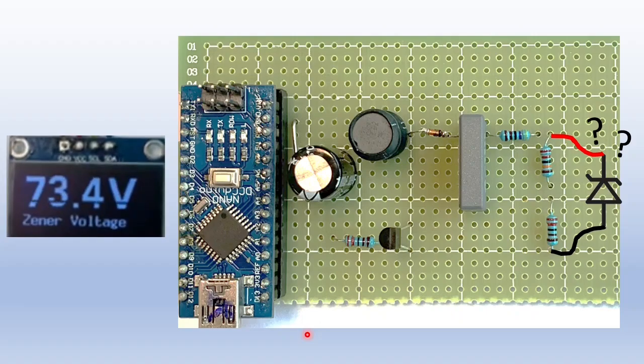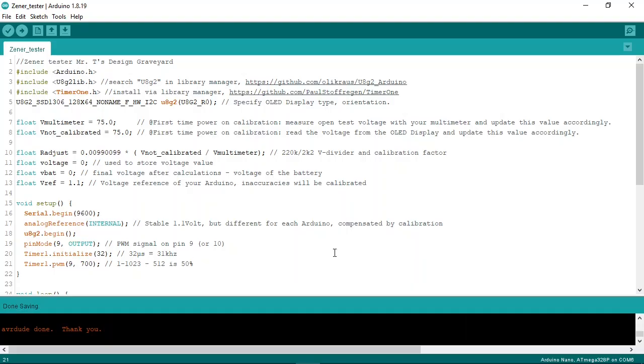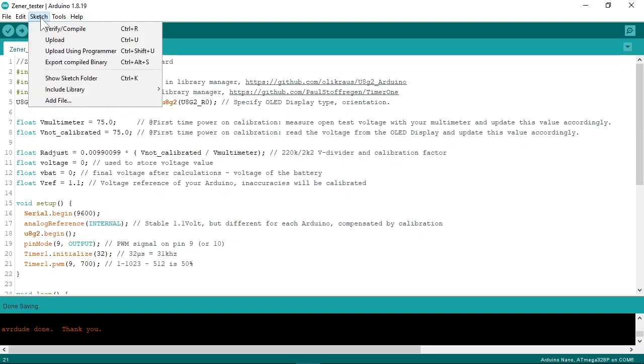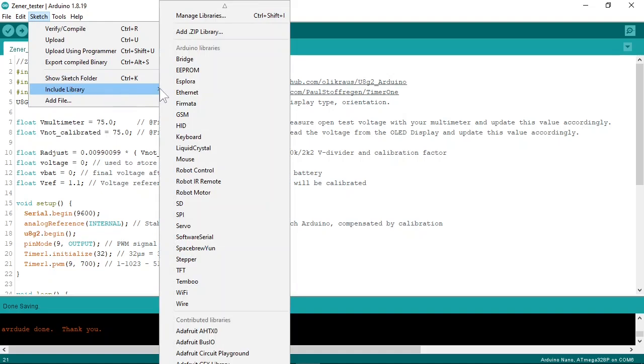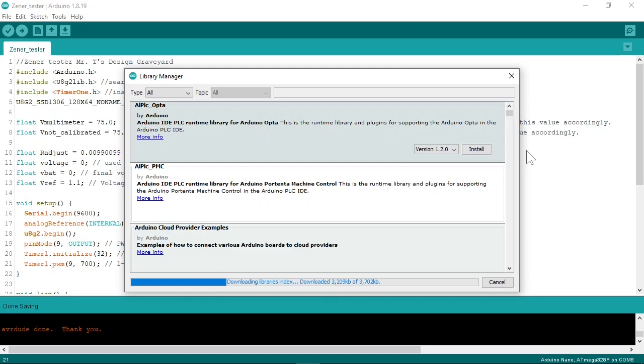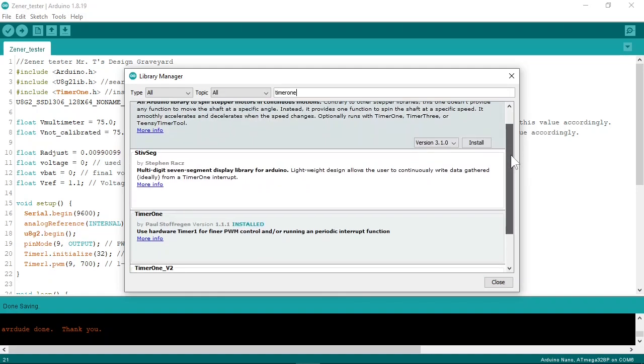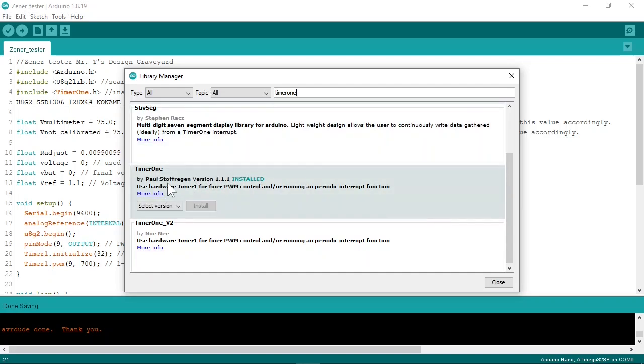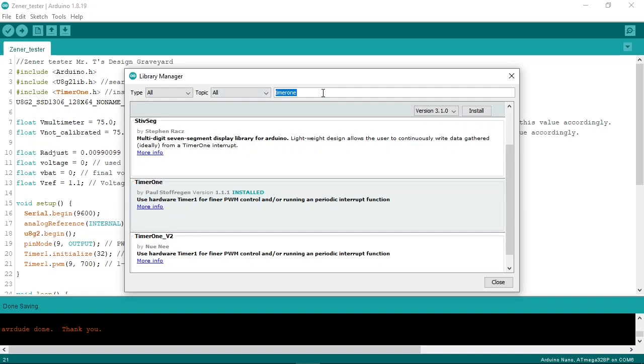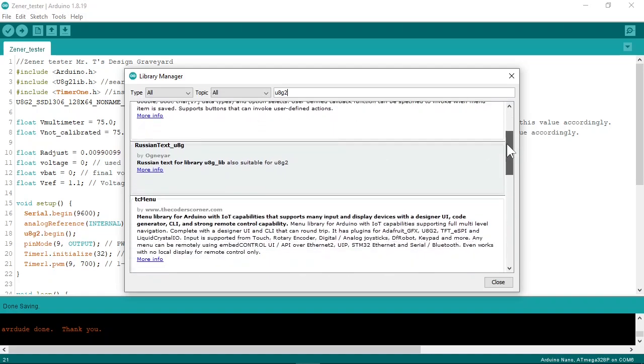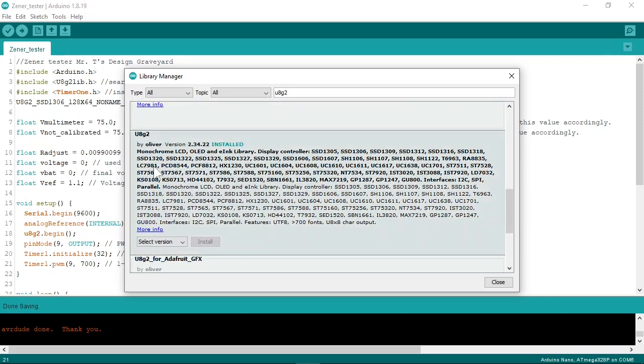Let me show you the Arduino code. Here is the Arduino code. You will need to install 2 libraries. U8G2 for the display and timer 1 for the PWM signal. For this go to sketch, include library, manage libraries. Then search timer 1 and install this one from Paul Stofregen. Then for the next one search U8G2. And install the U8G2 library from Oliver.